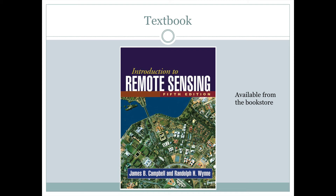The textbook for our Remote Sensing class will be Introduction to Remote Sensing, 5th Edition, by James Campbell and Randolph Nguyen. This book is available in the bookstore. It has been out for a while, so you might be able to find another copy online if you prefer — I would just recommend that you get the 5th edition. You'll have to do the readings in this book, and you'll have weekly quizzes based on readings from this book.